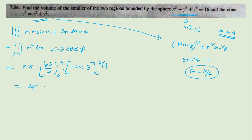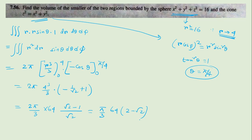Integrating over φ gives 2π; integrating R² gives R³/3 evaluated from 0 to 4, giving 64/3; and integrating sin θ gives -cos θ evaluated from 0 to π/4. So the result is 2π · (64/3) · (-cos(π/4) + 1) = 2π · (64/3) · (1 - 1/√2). Multiplying through, this simplifies to 64π/3 · (2 - √2). This is the answer to question 7.56.